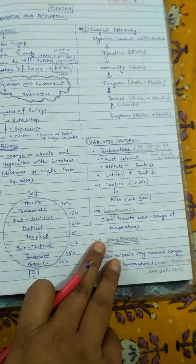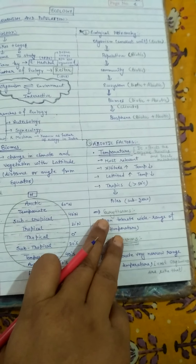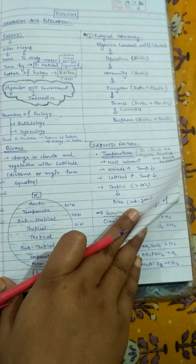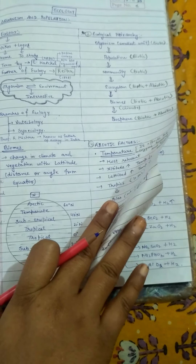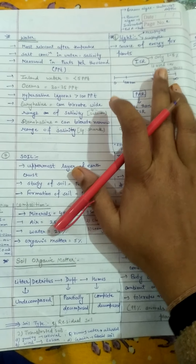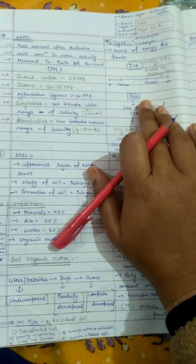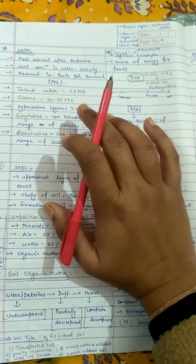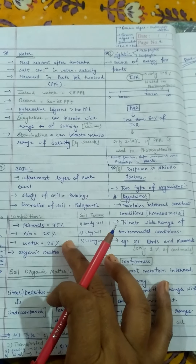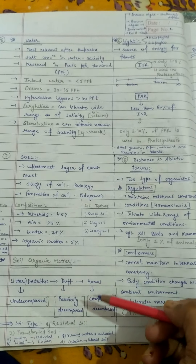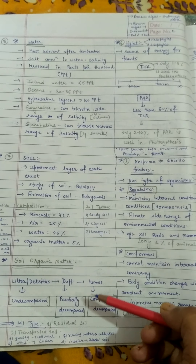We studied abiotic factors in detail. For temperature, I explained important terms like eurytherms and stenotherms. Please revise these from NCERT as well. We also studied water in detail, and we studied light — including what portion of incident solar radiation is photosynthetically active radiation. Finally, we studied soil, including its composition and humus in detail.